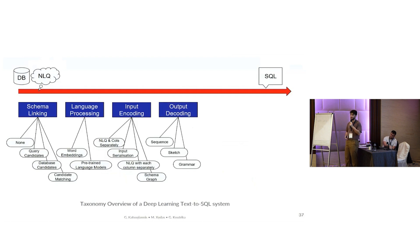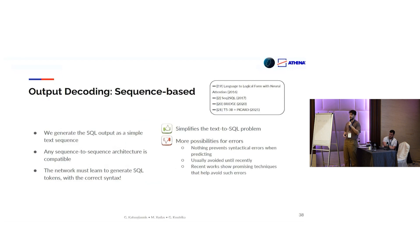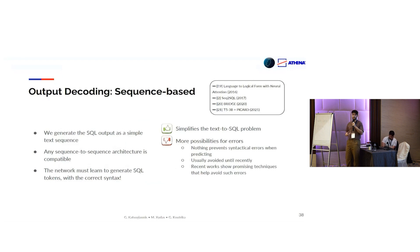We have created an internal representation in the network. Now we must consider how we're going to make SQL predictions using this information — we have three different types of decoders. First, sequence-based decoders generate the SQL query token by token. This is a simple way to design a decoder because we can use many available architectures. However, the network must also learn to generate the very complex SQL syntax, which allows many possibilities for errors, as it is very easy for such a decoder to mess up the correct order of clauses or make syntactical and grammatical errors.